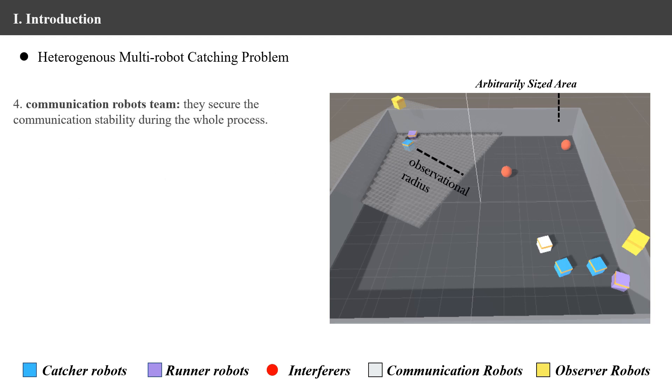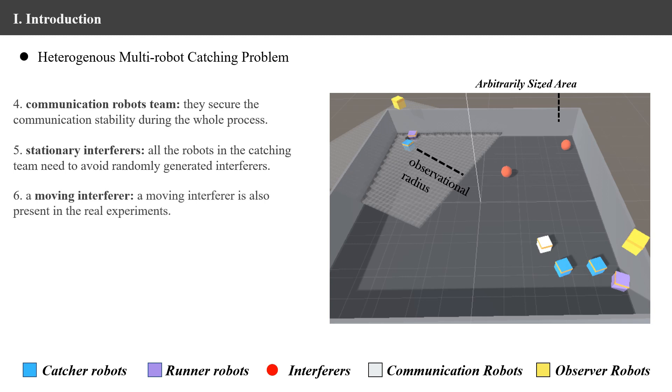A team of communication robots minimizes the distance between itself and other robots in the whole catching team. Randomly generated stationary interferers are also placed in the area. All the robots in the catching team need to avoid them during the catching process. In the real experiments, a moving interferer is also added to the system.